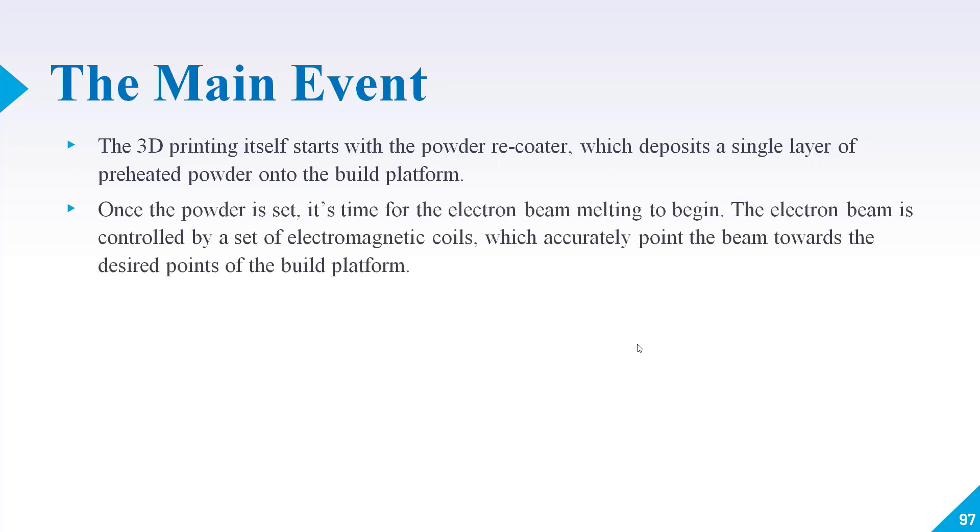Now let's talk about how this main event of 3D printing takes place. 3D printing itself starts with a powder recorder. One powder layer will be drawn which deposits a single layer of preheated powder onto the build platform. Once the powder is set, it's time for the electron beam melting to begin.